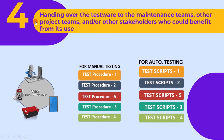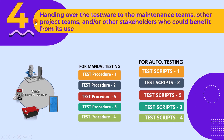The fourth activity is handing over the testware to the maintenance teams, other project teams, and other stakeholders who could benefit from its use. If this is the final release to the customer, then all the created testwares are shared with the maintenance team. Based on the customer's requirements, if any changes are required, the maintenance team can use the testware to address the request.